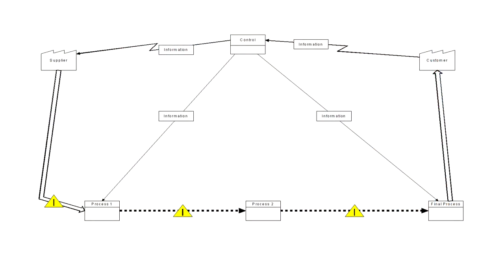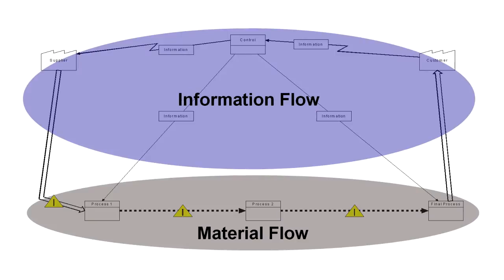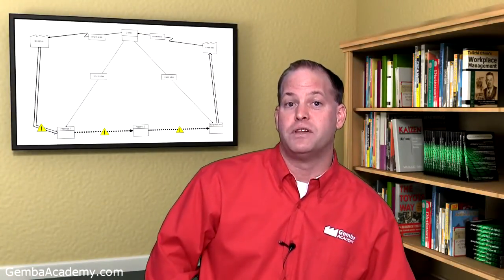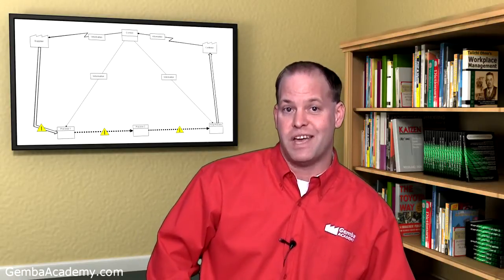While there are similarities between a Value Stream Map and traditional process flow maps, there are some major differences. Perhaps the most striking difference is the fact that Value Stream Maps focus on both material and information flow. Many flow charts do a decent job documenting material flow, but completely leave out the information side of things.